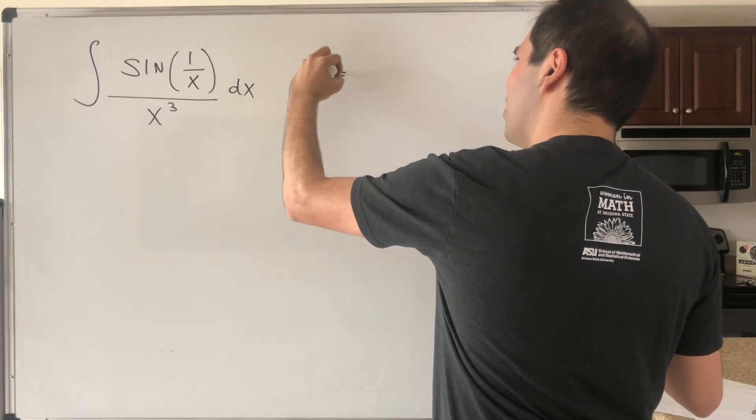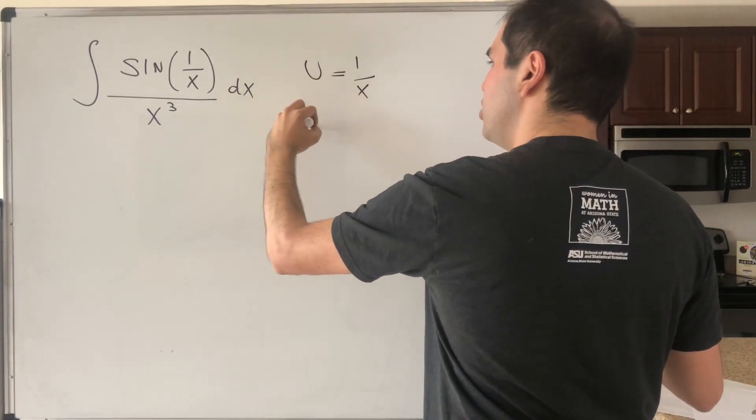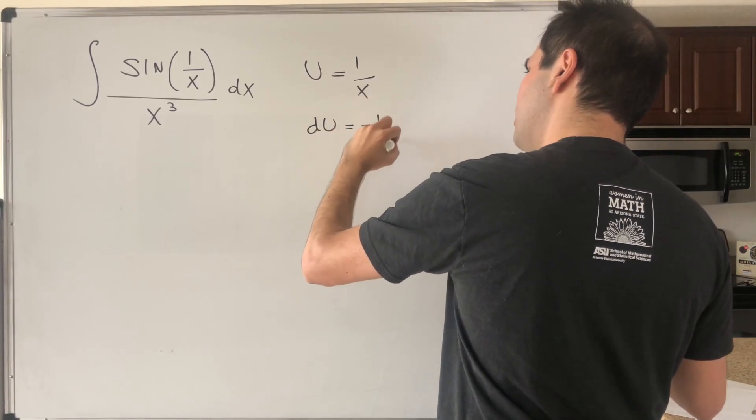So let u be 1 over x, then du is minus 1 over x squared dx.